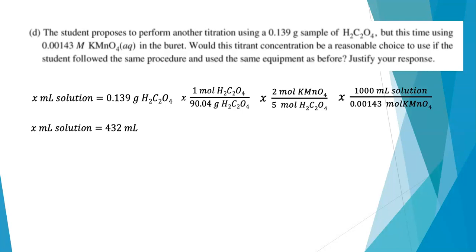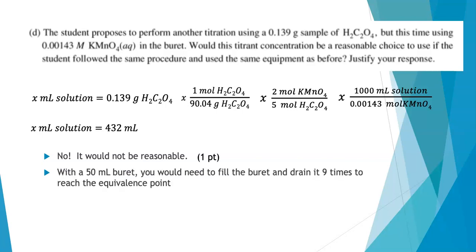Now, remember in the previous problem in part B, we used 26 milliliters. This is a huge, huge increase in the volume of potassium permanganate solution that I would need to use. And I would say that under these circumstances with a 50 milliliter buret, that would not be a reasonable concentration to use to carry out this titration. I'd have to refill my buret nine times and keep track of all that to reach the equivalence point of the titration. That's just not useful at all. Keeping track of it nine times, you forget, it's not reasonable. So this is how I chose to back it up. There are other ways to get to the same idea, but you do need to have math based reasoning.